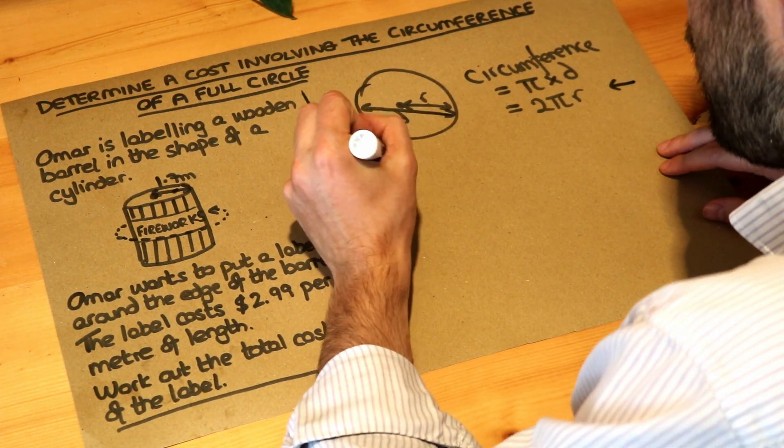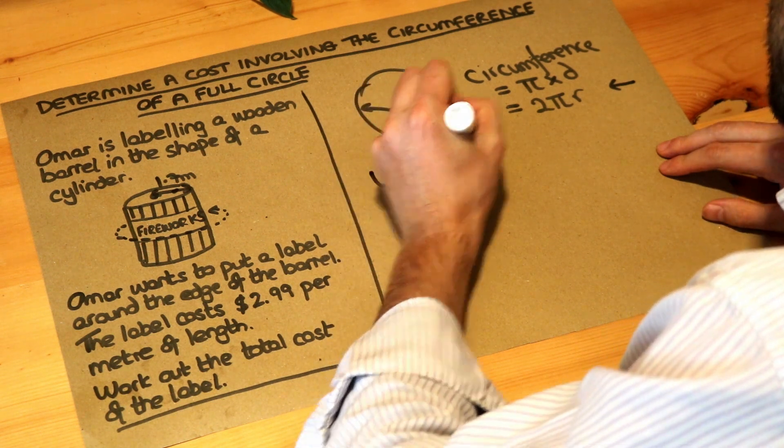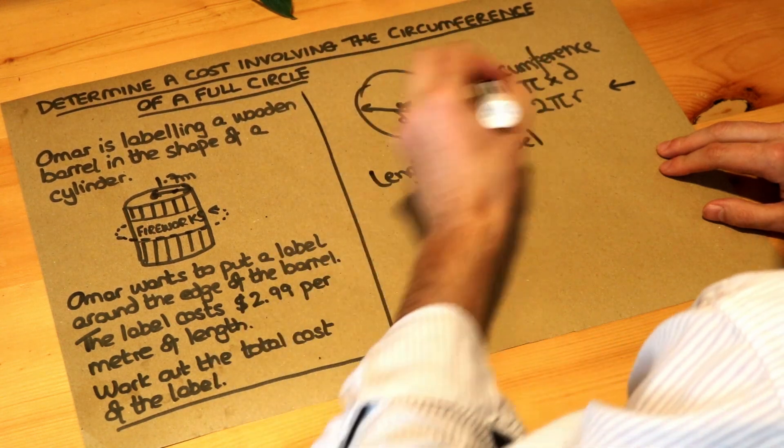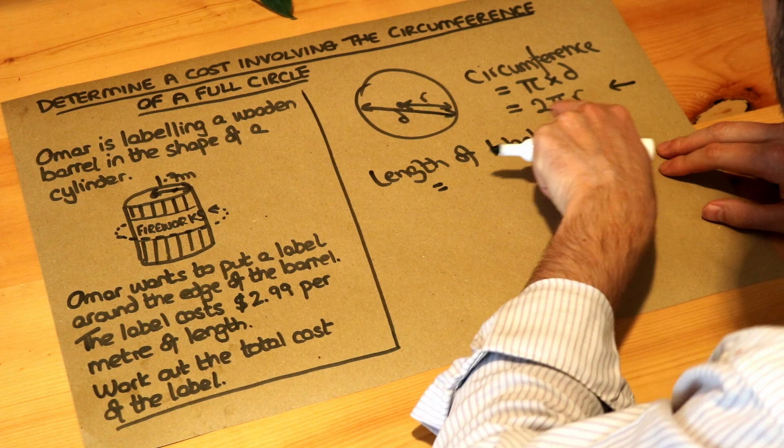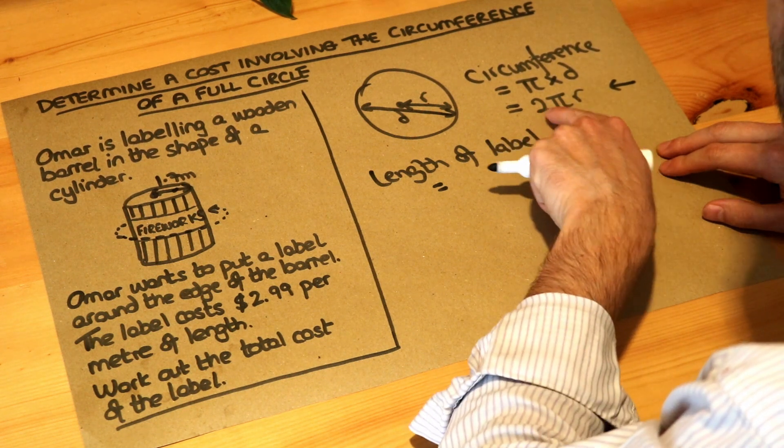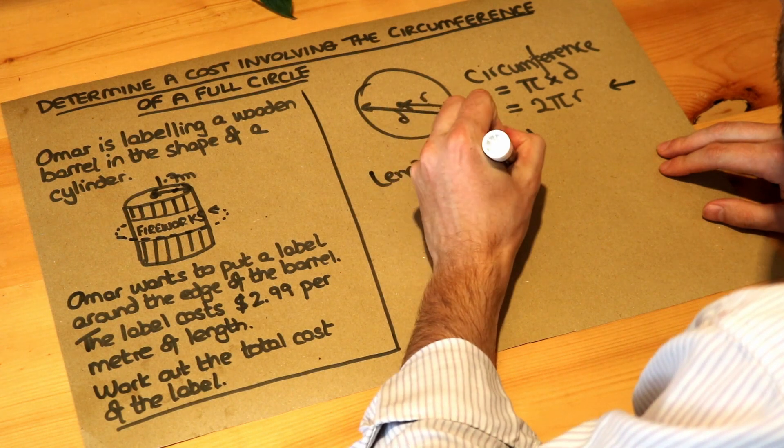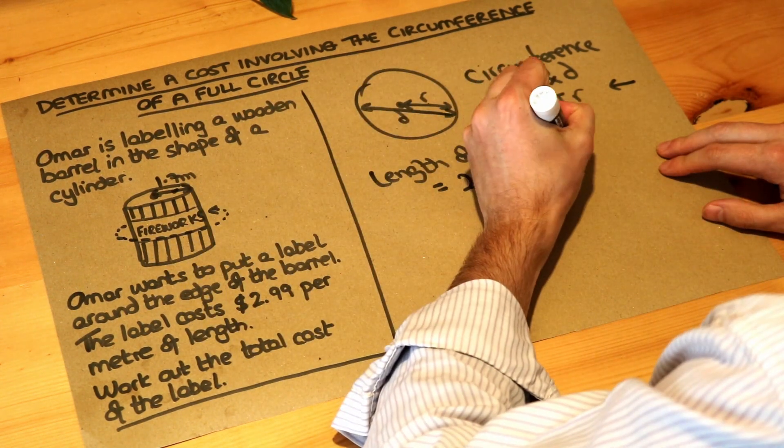So the circumference of the circle, or the length of the label in this case, the length of the label which is the circumference of the circle all the way around the edge of the barrel, that's 2 times π times r. Remember in algebra when we have things next to each other it just means you times them together, so it's 2 times π times r. So 2 times π times r where r is the radius of the barrel, 1.7.